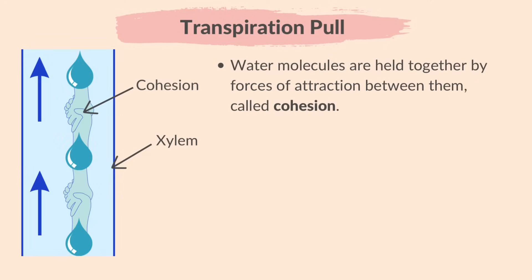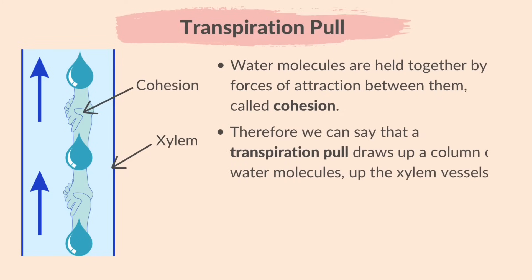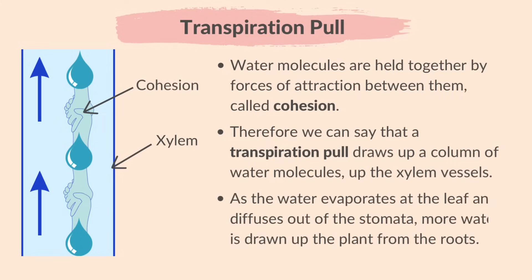Water molecules are held together by forces of attraction between them called cohesion. So when water moves upwards in the xylem, each water molecule pulls the one below it, as depicted in the picture. Therefore, we can say that a transpiration pull draws up a column of water molecules up the xylem vessels. As the water evaporates at the leaf and diffuses out of the stomata, more water is drawn up the plant from the roots.